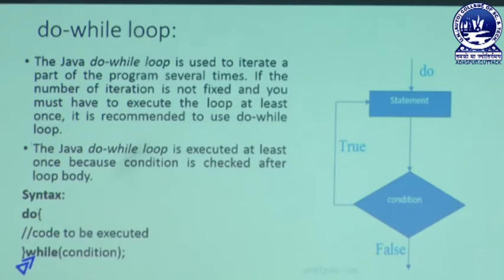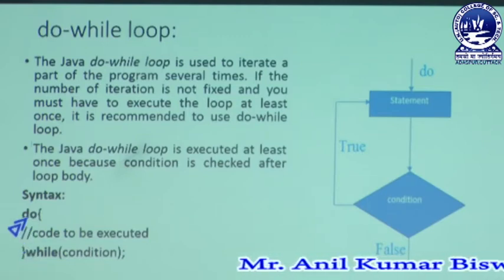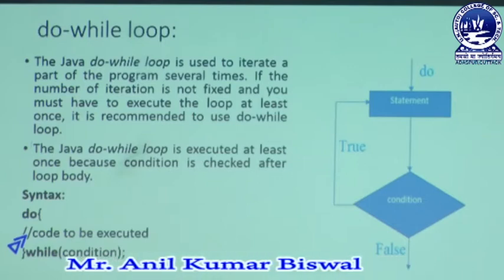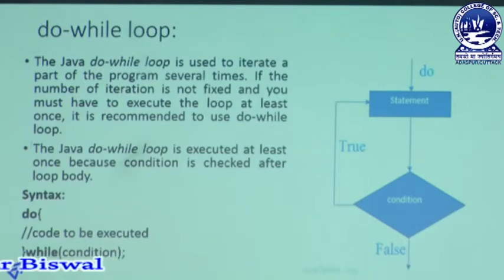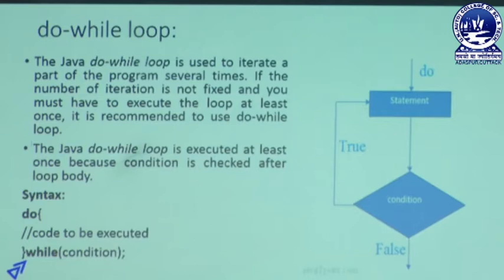There is a difference between do-while loop and while loop. The only difference is: in do-while syntax, first you write the 'do' keyword — do is a keyword — then you write some statements inside the do block. After that, you write the while condition, ending with a semicolon. In this way, we create our do-while loop structure. With the do-while loop, execution happens first, then condition is checked — meaning first execute, then condition check.